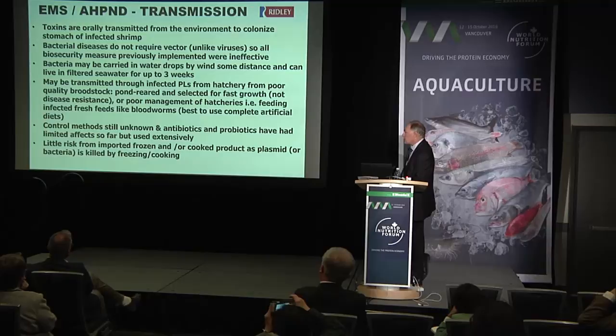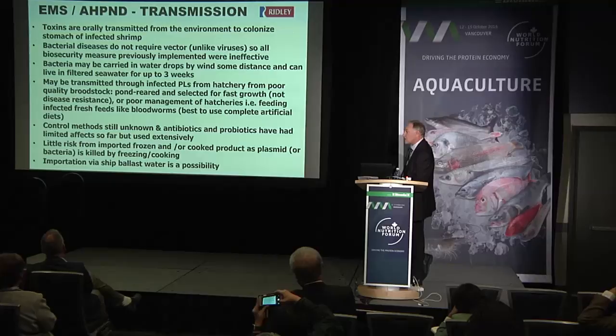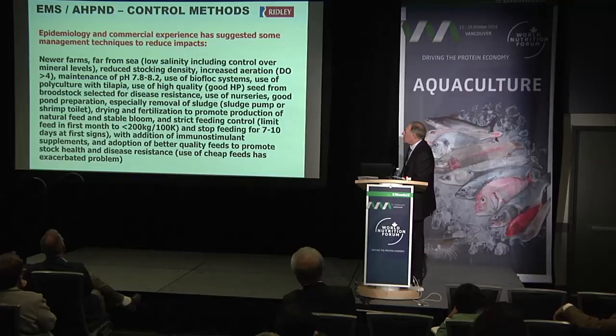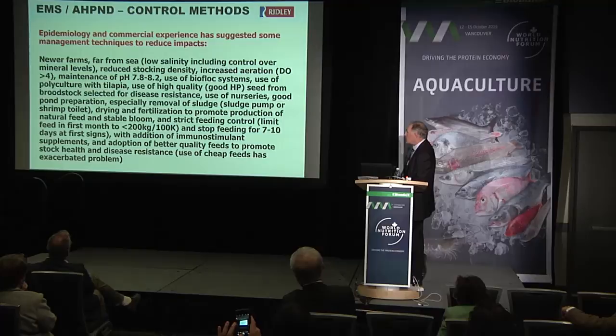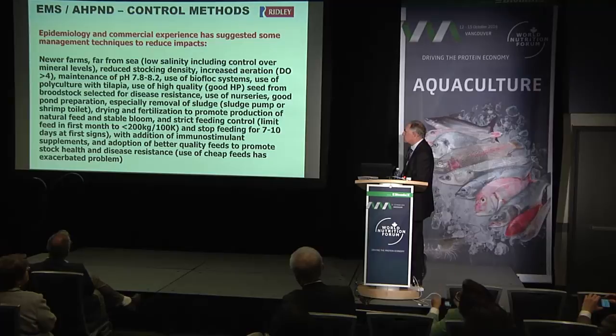There isn't much risk of importing it in frozen or cooked product as the bacteria and plasmid are killed by freezing or cooking. But it may be spread by ballast water from ships — a distinct possibility. In terms of epidemiology, what successful farms do: newer farms far from the sea using low salinity have been effective, reducing stocking density, increasing aeration, biofloc systems, polyculture with tilapia, using good quality seed from disease-resistant broodstock, removing sludge from the pond using devices like the shrimp toilet, which accumulates all the sludge and flushes it out of the pond.